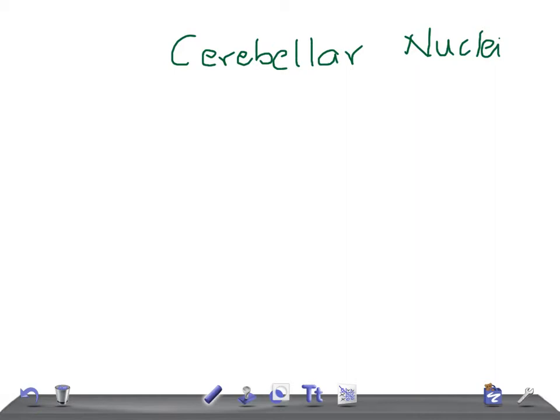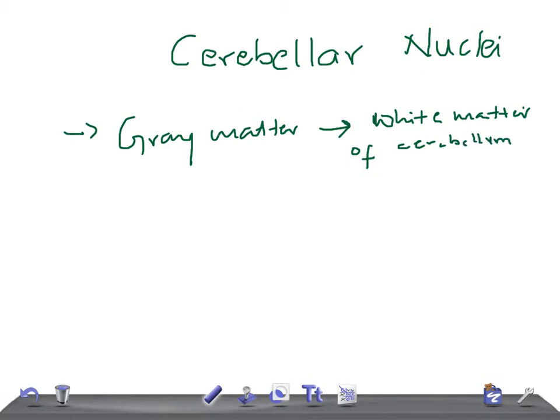Briefly about the cerebellar nuclei. Cerebellar nuclei are the masses of gray matter scattered in white matter of cerebellum. There are four nuclei on either side - four on this side, four on this side. So let me draw and show you.